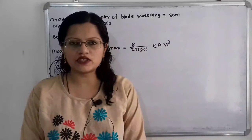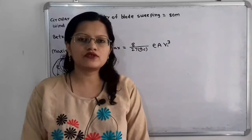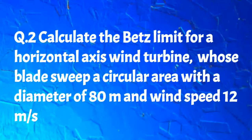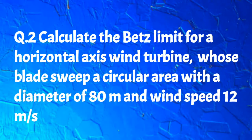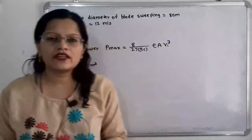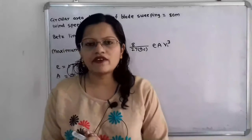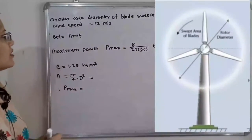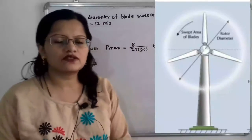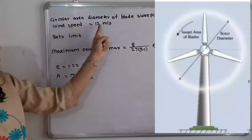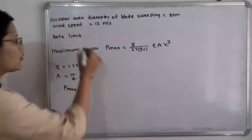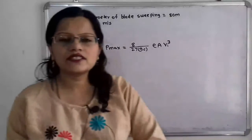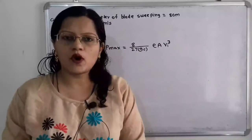Now we will move to the second question, which is based on the Betz limit. The question is: calculate the Betz limit for a horizontal axis wind turbine whose blades sweep a circular area with a diameter of 80 meters, and for an upstream wind speed Vi equal to 12 meters per second. The given data is diameter 80 meters and wind speed 12 meters per second.